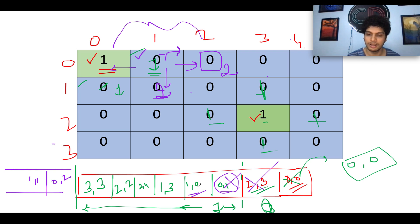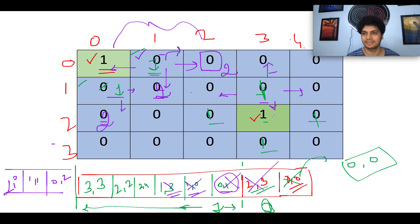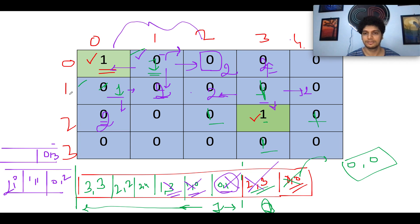We extract (1,0) and look at its neighbors. One is already visited, one updates to distance 2, giving us (2,0) added to the queue. Next we process (1,3): its four neighbors are checked — one is a land cell we skip, and the remaining three water cells get updated to distance 2. We add (0,3), (1,2), and (1,4) into the BFS queue.